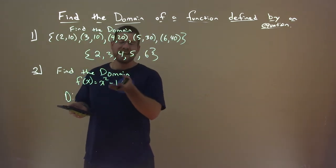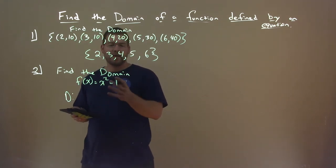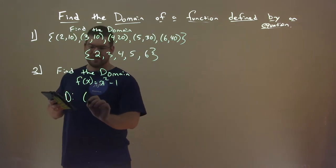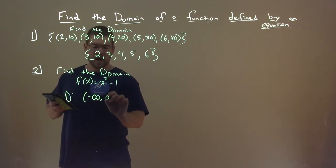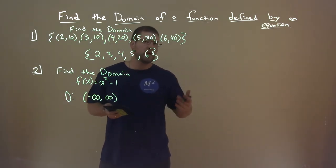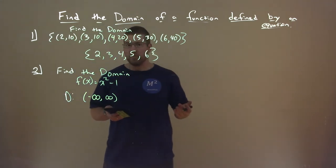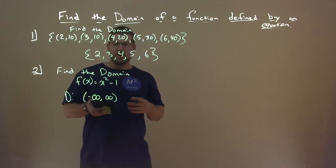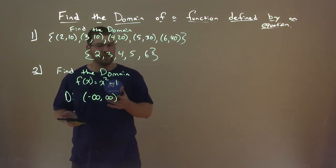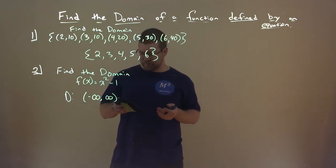In a lot of cases there are no restrictions — we can plug anything we want in for X: negative infinity, negative 100, positive 100, zero. There's no value we're not allowed to plug in for X here. So our domain is from negative infinity to positive infinity — that's all real numbers. Any real number can be plugged into this equation and we get some output.